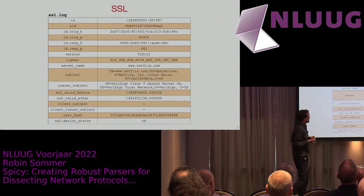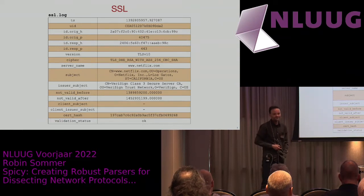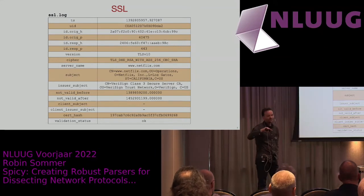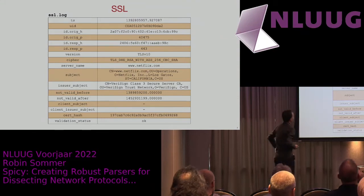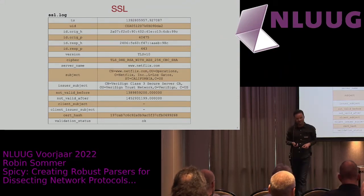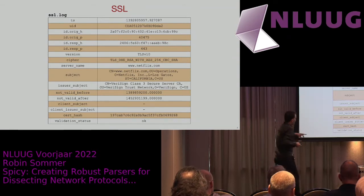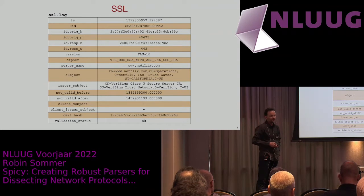One more example: SSL. Zeek has an SSL parser. SSL is encrypted, so how much can you get out of it? It turns out, a lot. You don't get the payload — what's running over SSL — but for most SSL/TLS versions so far, you get an amazing amount of information out of the protocol handshake. You can see which ciphers have been used, the server name — what SSL sends to virtual servers to know which server to talk against — and you get the certificate. Zeek can validate certificates on the fly to see if they check out against the root store. So you get a lot of information about your SSL traffic as well.